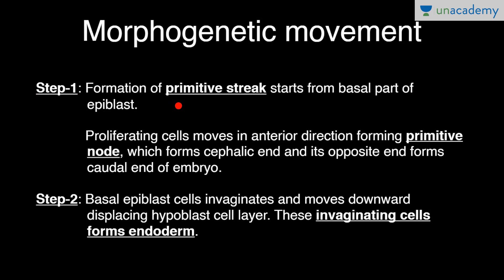Step 1: Formation of the primitive streak starts from the basal part of the epiblast. Proliferating cells move in the anterior direction forming the primitive node, which forms the cephalic end, and its opposite end forms the caudal end of the embryo.